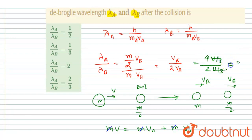So v/3 will get cancelled out and you will get ratio as 2. So lambda ratio will be 2.